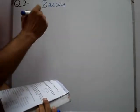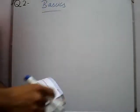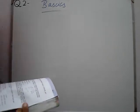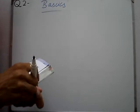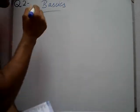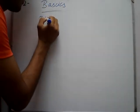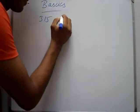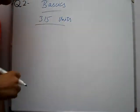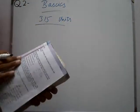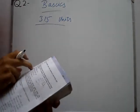Question No. 2 Basics. First of all, we will learn how to make units — how to calculate units. If we have units written, let's suppose 400 units, 315 units. We have a table. First 100 units.